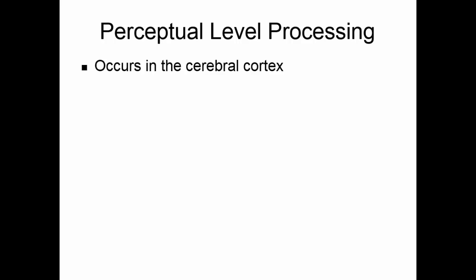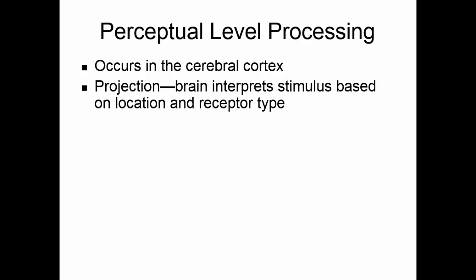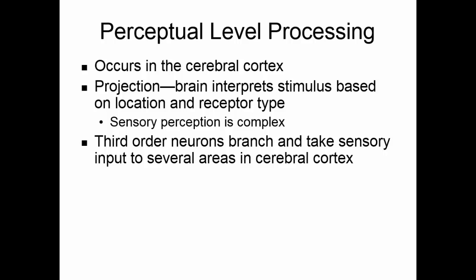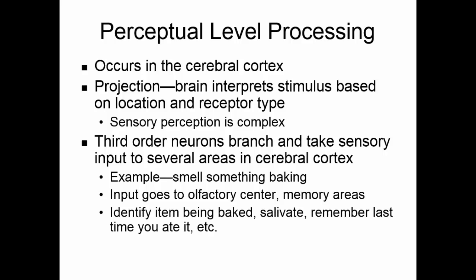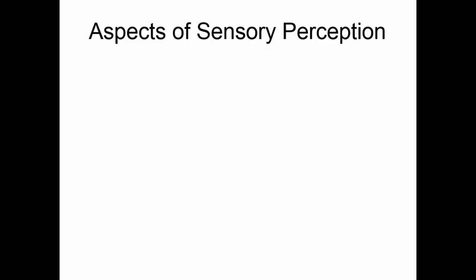The perceptual level of processing occurs in the cerebral cortex. The brain will use projection fibers to send the impulse to several places in the brain and interpret the stimulus based on location and receptor type. Sensory perception is very complex — usually multiple parts of the brain are involved. Third-order neurons will branch and take sensory input to several areas in the cerebral cortex. For example, if you smell something baking, that's going to tickle your olfactory cortex, but you'll start going to memory areas to remember what you're smelling, and you may begin salivating. So you trigger a whole cascade of perception in your brain.